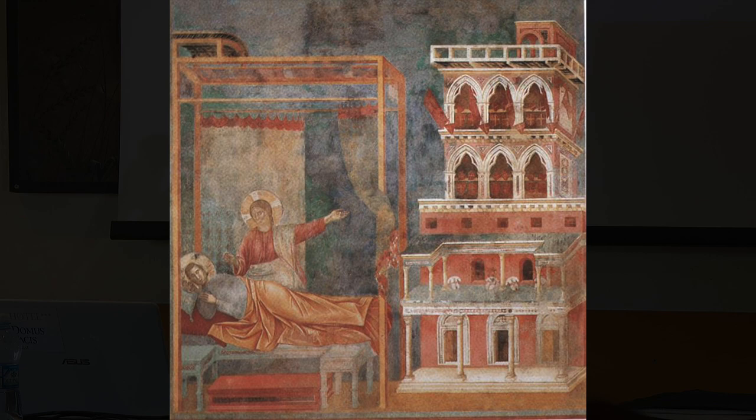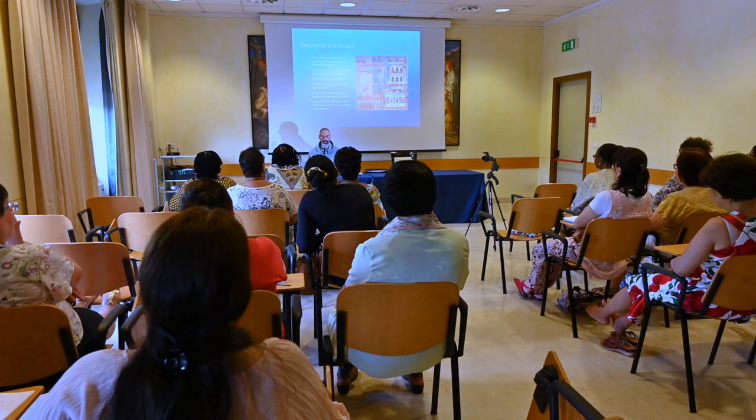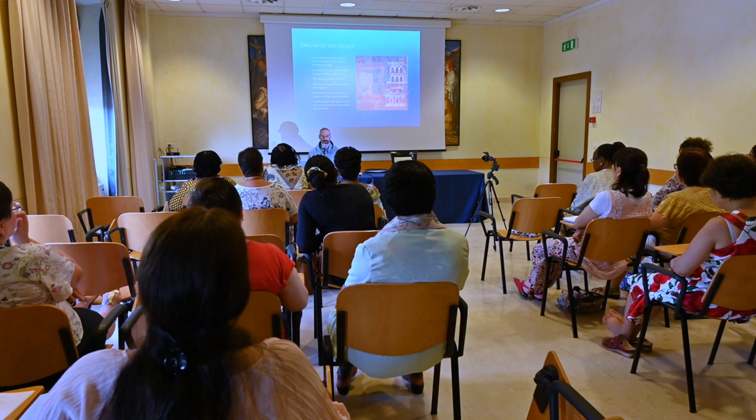While on his way there, he had a dream in which he saw a palace full of weapons — arms and armor — all marked with the sign of a cross. He asked, 'To whom do these belong?' and got the answer, 'All these things are for you and your knights.' So he took this as a good sign: he was going to become a knight, and not only a knight but he would have knights of his own.